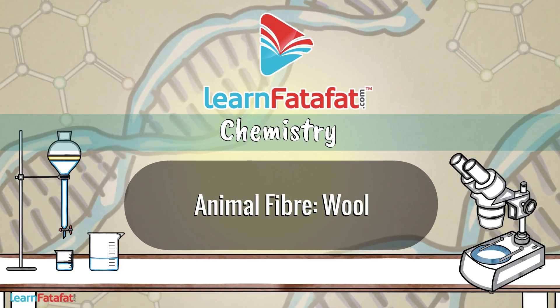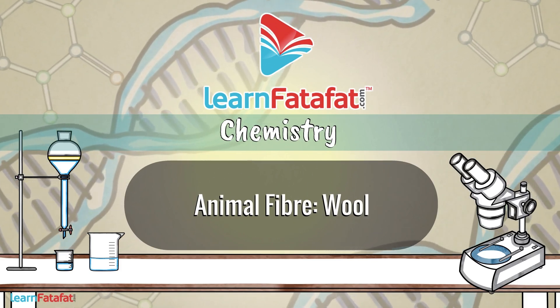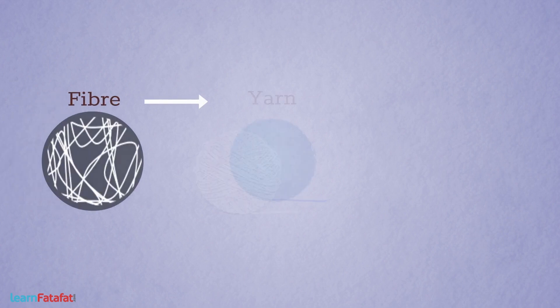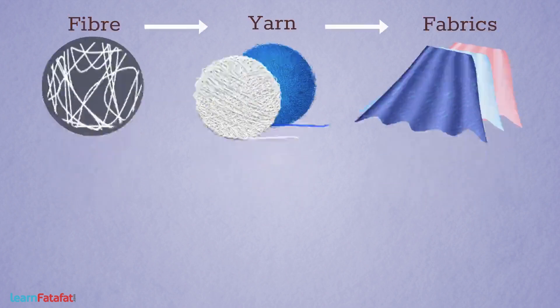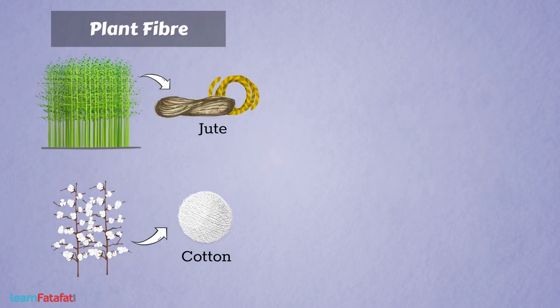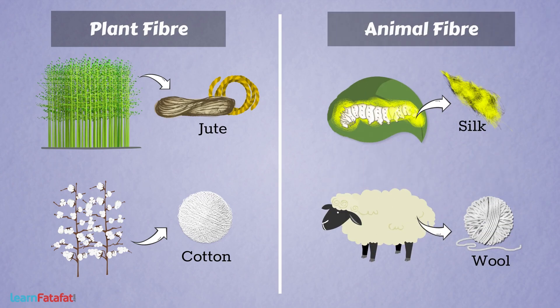Fibres are used to make yarn, which in turn is used to make fabric. Fibres obtained from plants are plant fibres, while those obtained from animals are animal fibres. For example, wool and silk.